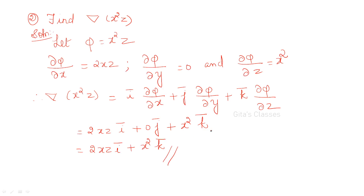Similar problem: phi = x²z. Differentiate partially with respect to x, y, and z. Here there is no y term, so ∂φ/∂y will become zero.